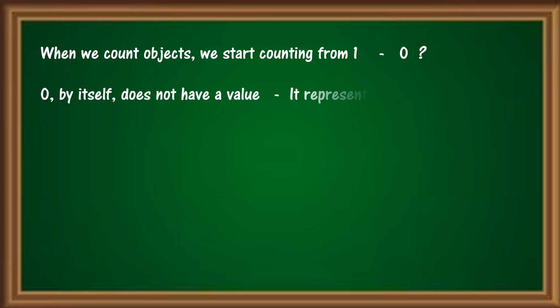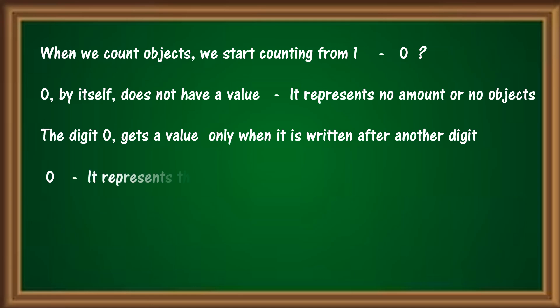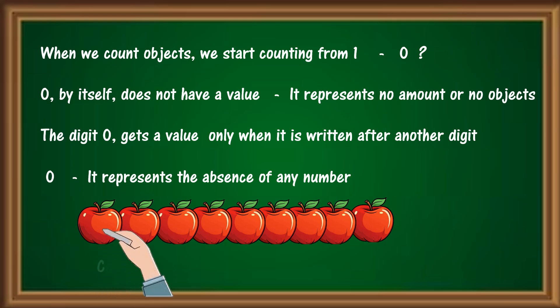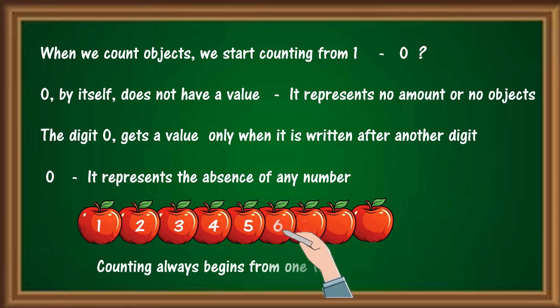It represents no amount or no objects. The digit 0 gets a value only when it is written after another digit, which means that when we write 0, it actually represents the absence of any number. So, counting always begins from 1.